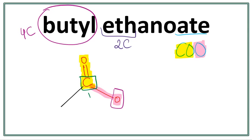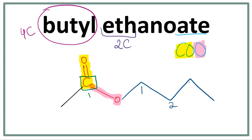Let's draw the four carbons in the side chain and attach it with the oxygen: one, two, three, four. Let's number these carbons — first, second carbon, third carbon, and the fourth carbon. So this is the side chain. Since we are drawing a line structure, we don't really need to write out the C here for carbon.